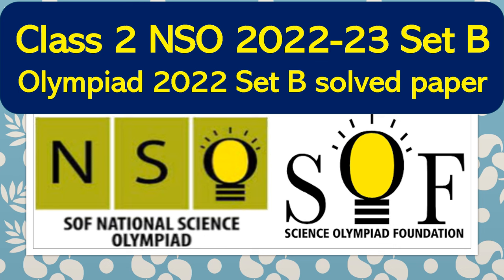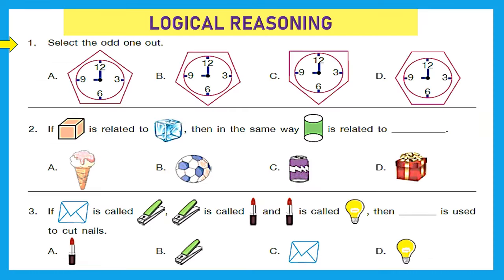To prepare more for your Science Olympiad, let's solve one more Class 2 NSO 2022 Set B question paper. Let's solve it and get ready for your Olympiad. The first section is logical reasoning. Question 1: select the odd one out.